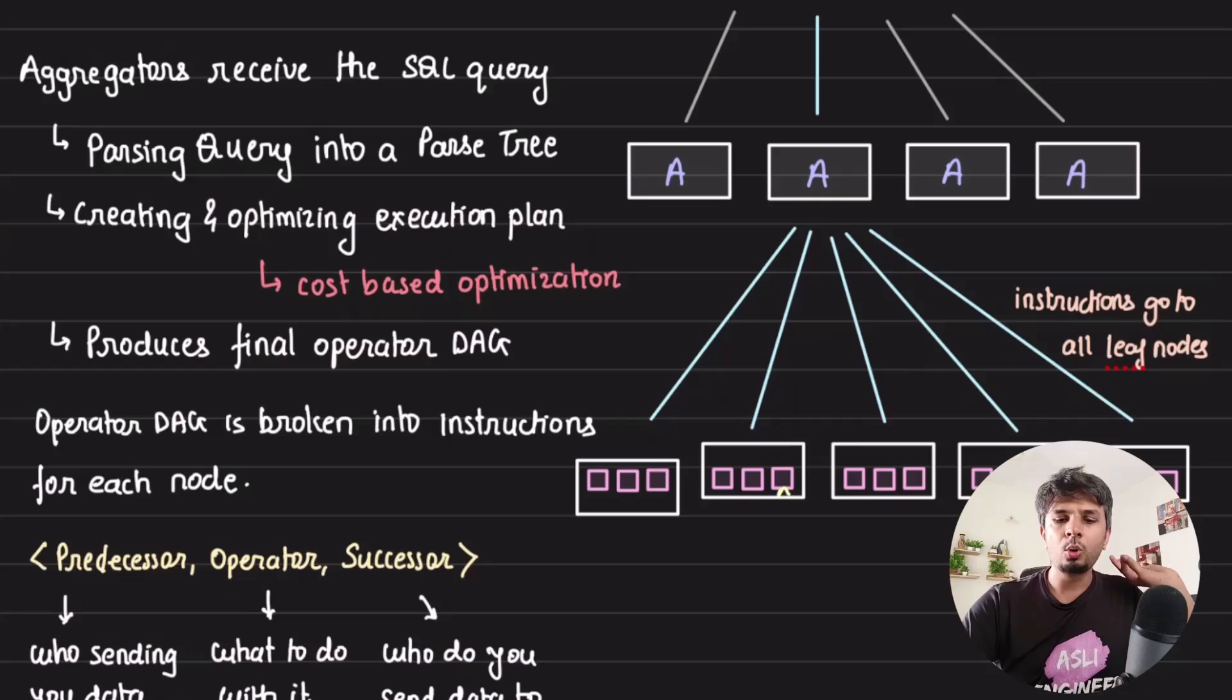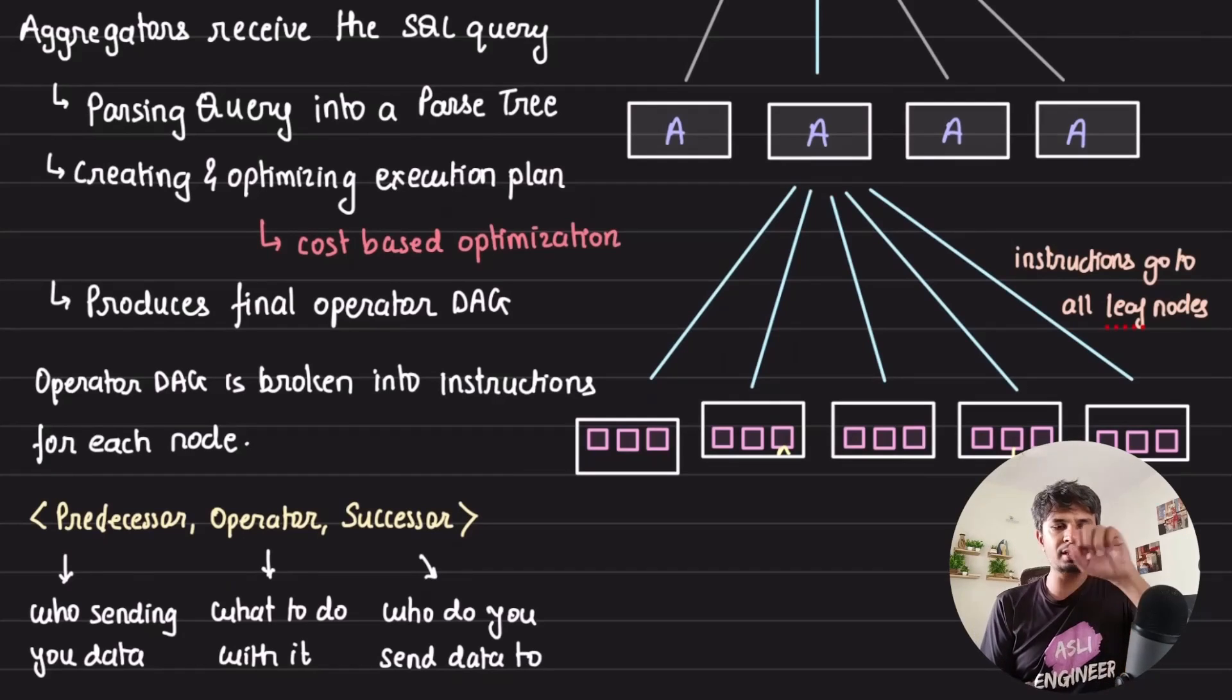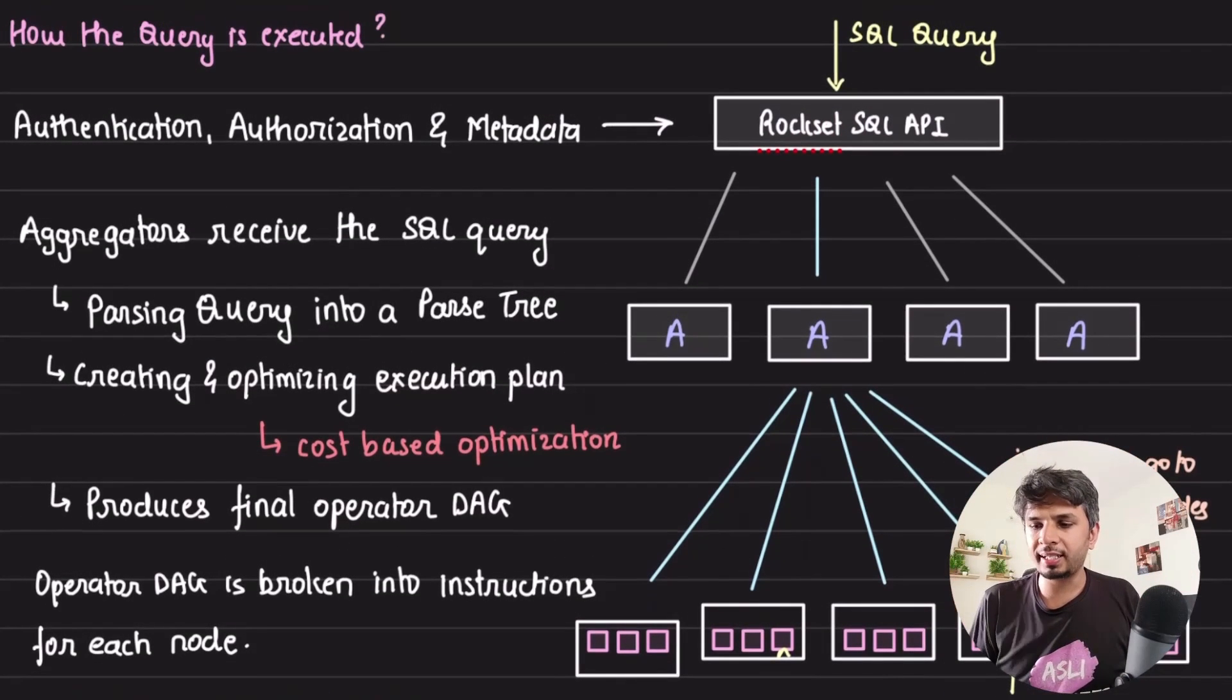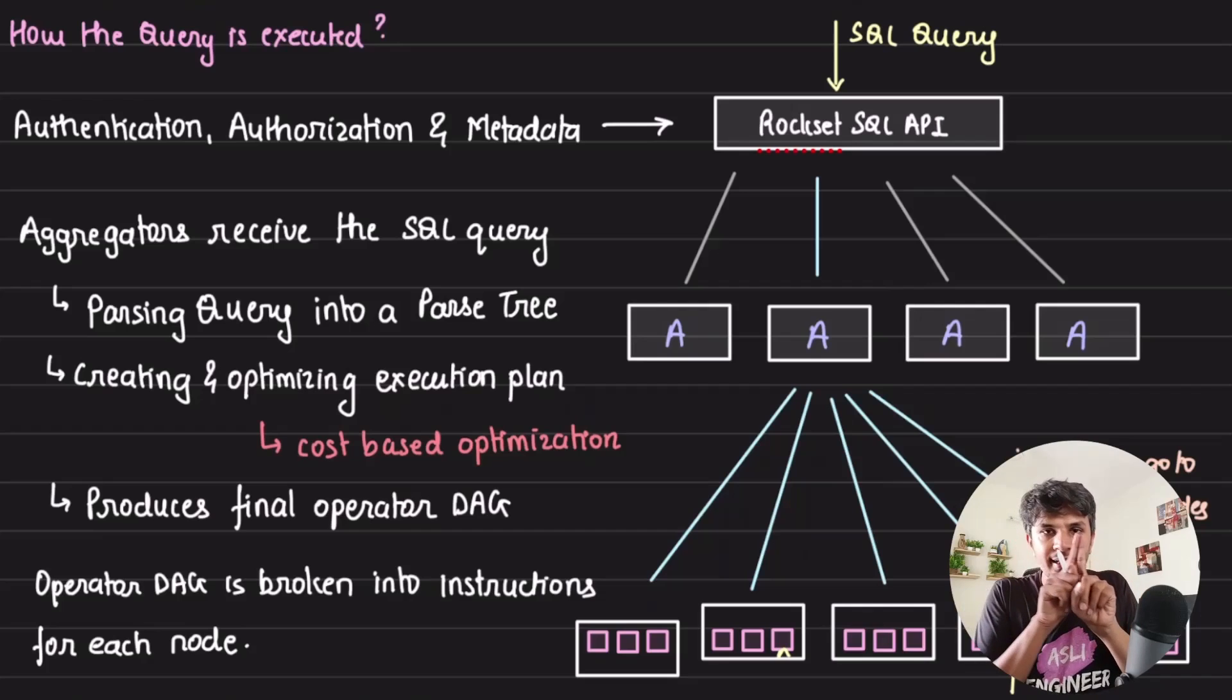The operator DAG is actually broken into instructions for each node. Each node instruction is like: who is the predecessor of this node, what is the operation that we need to do, and who is the successor - which means from where you should be pulling the data, what you should do with the data, and what you need to do after that, to whom you need to send the data.